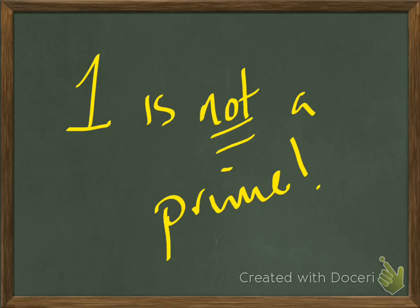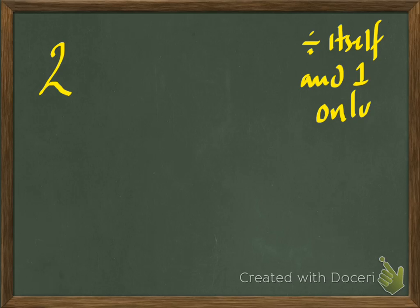And the other bits, well, let's have a look at some numbers. So the first one is the number 2, so let's try our test, and that is, can I divide it by itself and 1 only? That's sort of my rule.